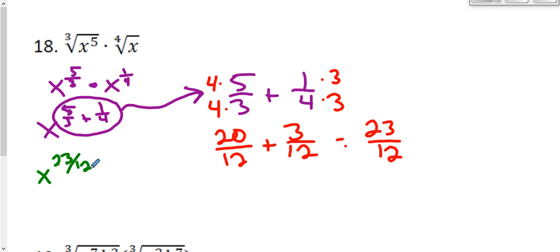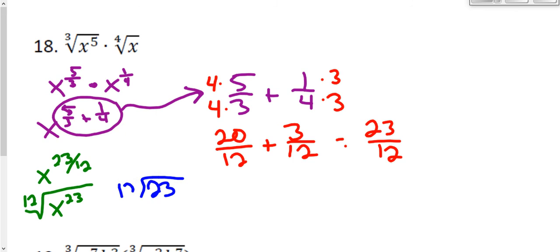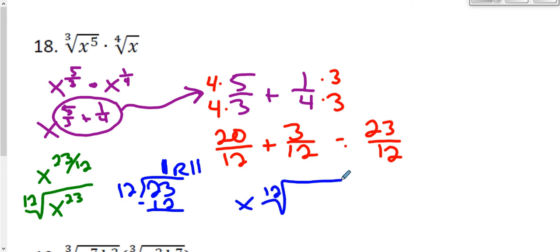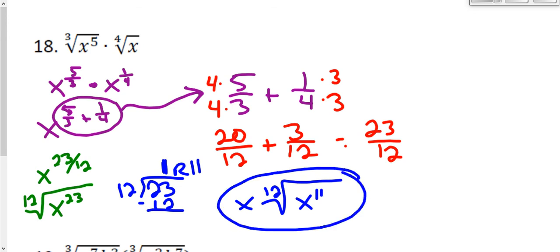I'm almost finished — I just have to simplify. The exponent twenty-three over twelve can't be reduced, so putting it in radical form is the easiest way to simplify. x to the twenty-third power means there are 23 x's inside the radical, and 12 is the index. Using the division method: 12 goes into 23 once with a remainder of 11, so one x comes out and eleven x's stay inside. Since I took an even root and have x by itself, I can also put an absolute value there.